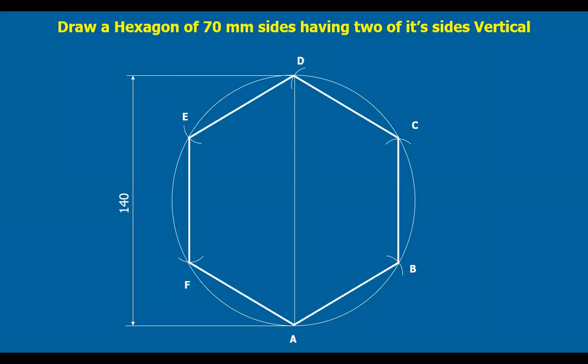You get all the six points marked. You get two sides vertical, isn't it interesting? Yes, so very simply you can, we often draw the hexagon many times. So this is a very simple method to draw the hexagon.